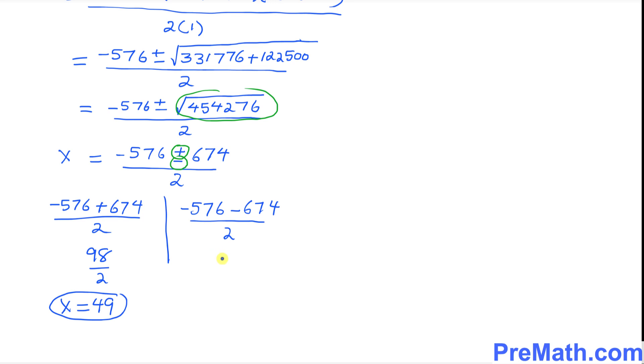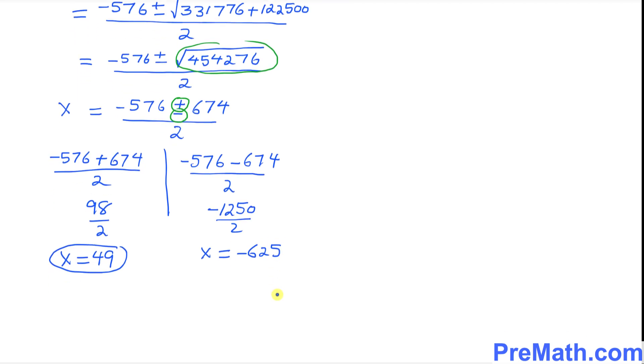And on this side, when you add them, that's going to give you negative 1250 divided by 2. That is going to give you x equal to negative 625, as you can see.